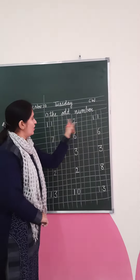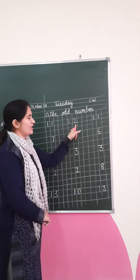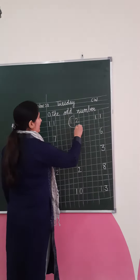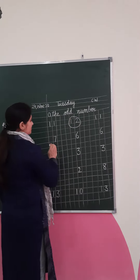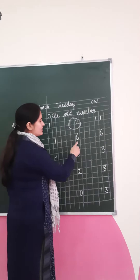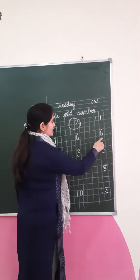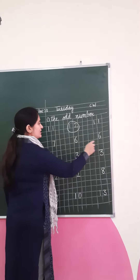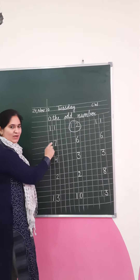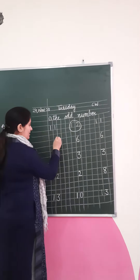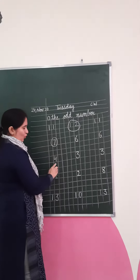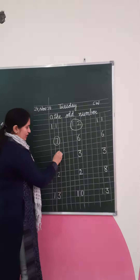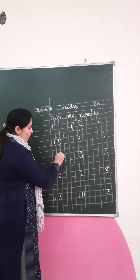These two are same but this is the odd one. Next: 4, 3, 3. This is the odd one — number 4 is odd.